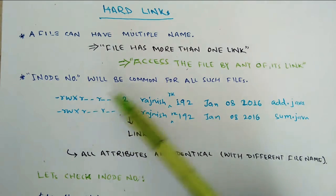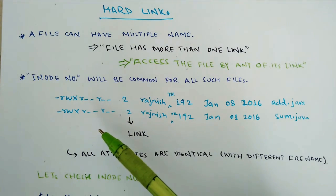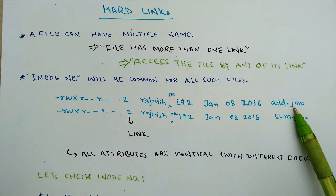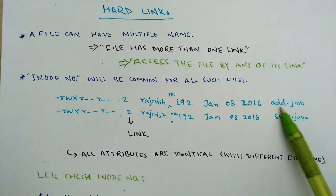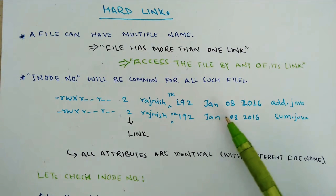Inode number will be common for all such files. We can see examples and commands. The inode number will be common. Now, we are going to assume add.java is the first file and sum.java is the first copy. When the first file has already existed, we can create another copy.